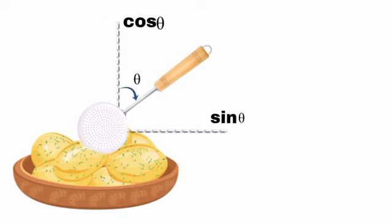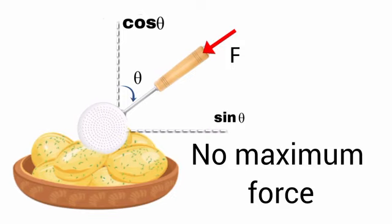You know that the value of cos less than 90 degrees is not much appreciable. That is, the value will be much smaller. So maximum force is not exerted on the vegetables.